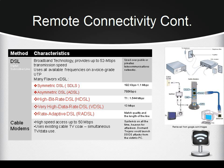HDSL receives and sends data at the same speed. Very High Bitrate DSL, or VDSL, is an extremely fast and asymmetric connection, but only works over short distances using standard copper phone wiring. Rate Adaptive DSL, or RADSL, is a popular variation of ADSL that allows the modem to adjust the speed of the connection depending on the length and quality of the line.